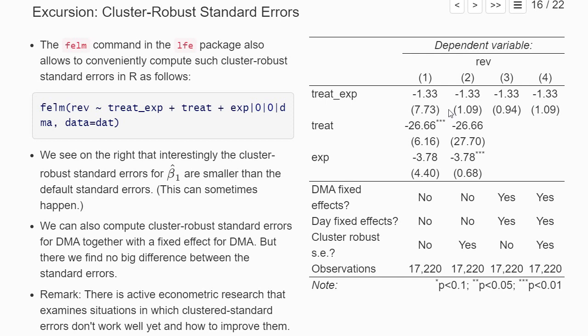In the original regression where we didn't add the DMA fixed effects, clustering the standard errors on DMA had a big impact on the estimated standard error.